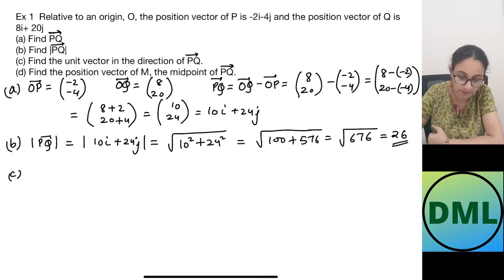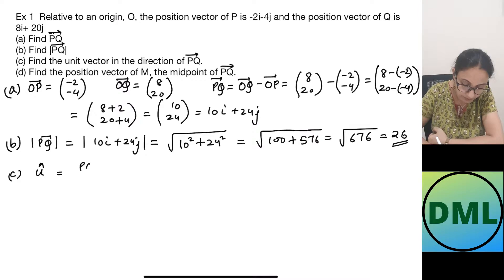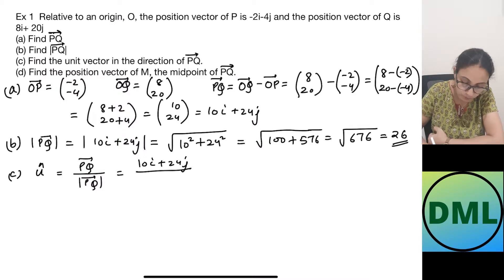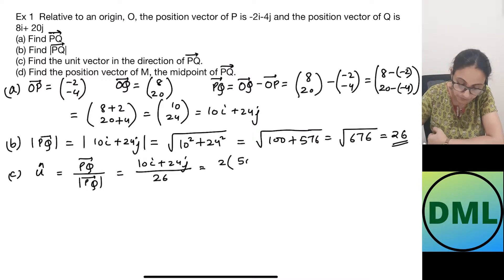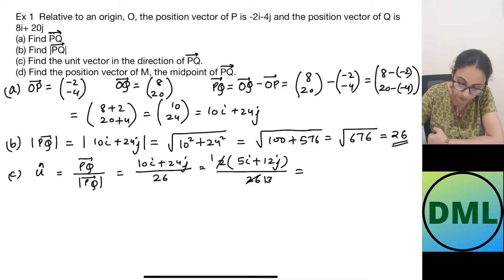Now we need to find the unit vector in the direction of PQ. The unit vector is given by the vector PQ over the modulus of PQ, which is 10i plus 24j over 26. From the numerator, 2 is common, giving 5i plus 12j over 26. The 2 cancels with 26 to give 13, so the unit vector is 5i plus 12j over 13.